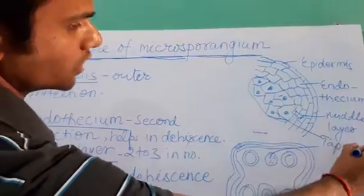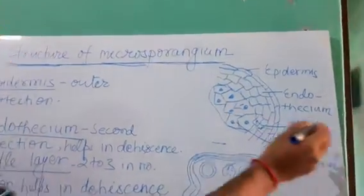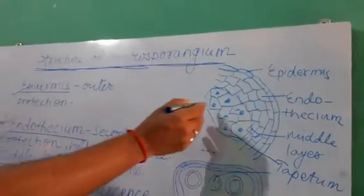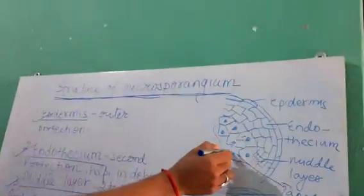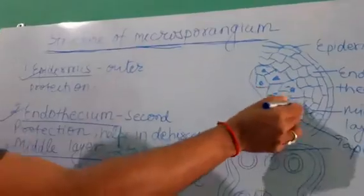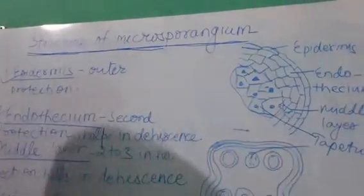After the middle layer comes the innermost layer, which is the tapetum. The tapetum is the innermost layer. Inside the tapetum, the microsporangia are present. This second figure also shows the microsporangium, confirming the same layered structure.